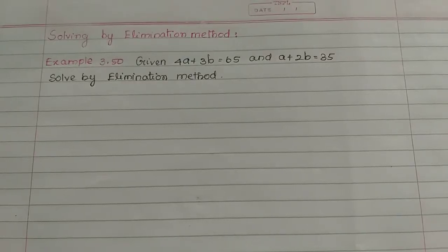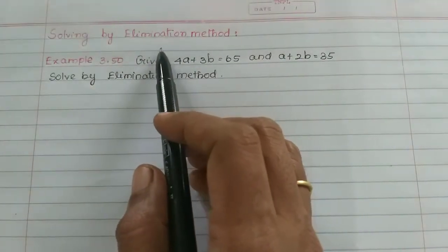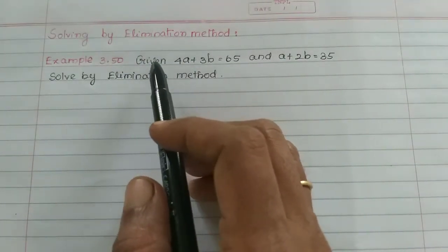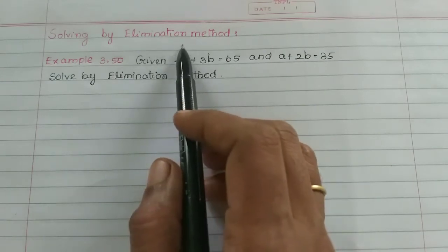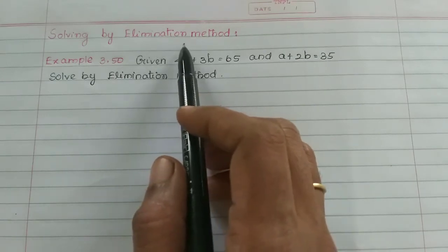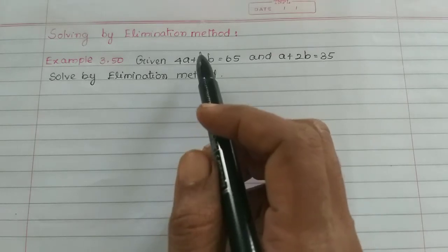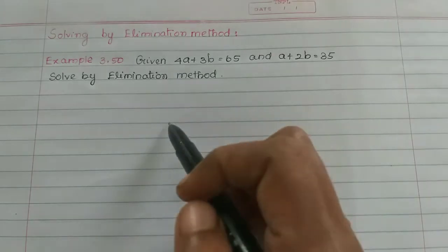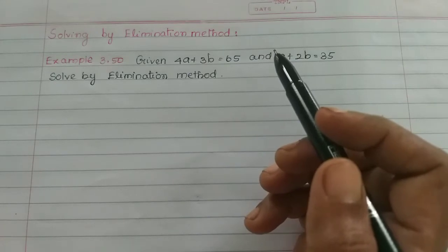Hi students. In this video we will talk about solving by elimination method. We will also talk about substitution method — in substitution method, instead of x and y, we substitute a value. Elimination method is used to eliminate one of the variables. The word eliminate means to remove.